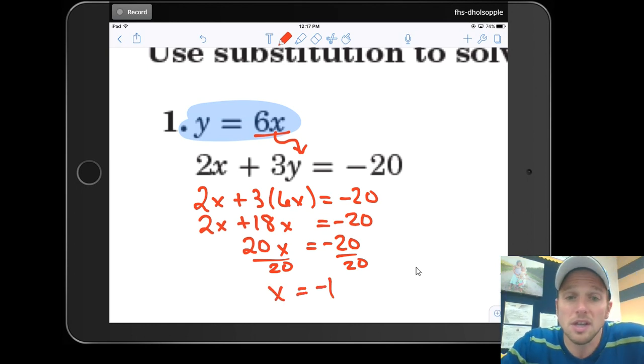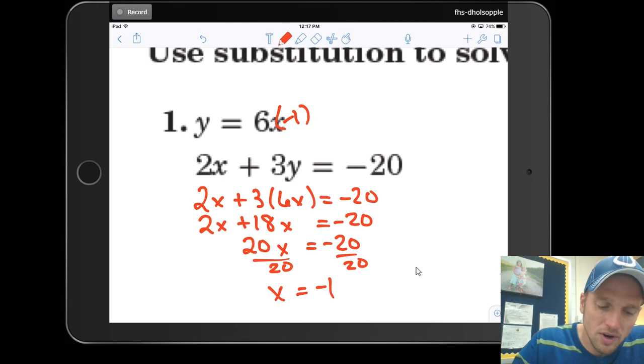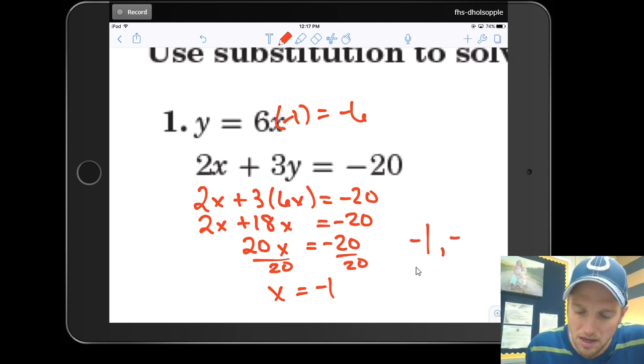So that first part was pretty easy. Now I need to substitute, now I know x is negative 1. Let's look back at this first equation, the one that I had highlighted, and since I know that x is negative 1, if I put negative 1 in for x right there, I see 6 times negative 1 is negative 6, so y is equal to negative 6. So my answer is going to be negative 1, negative 6.